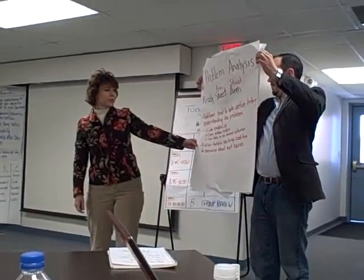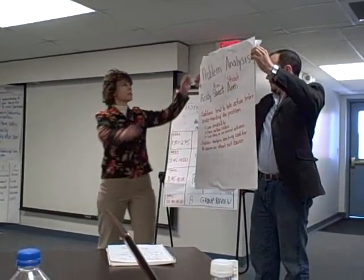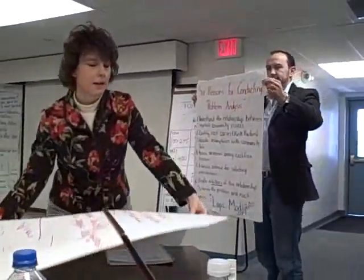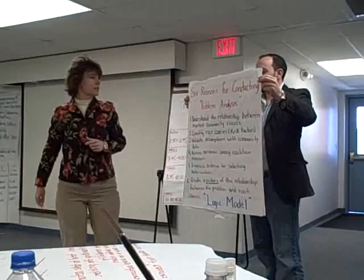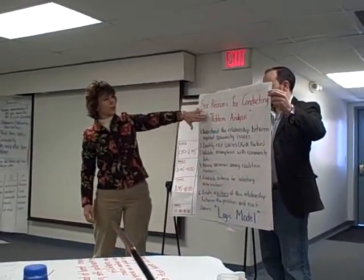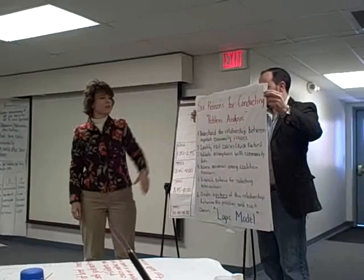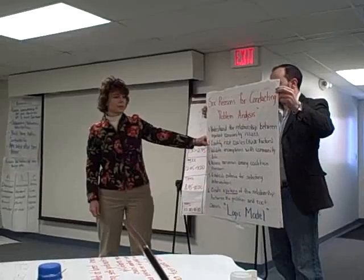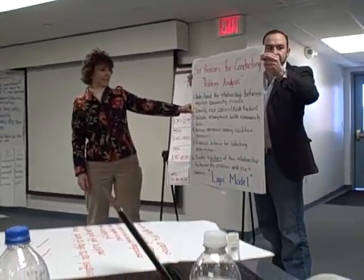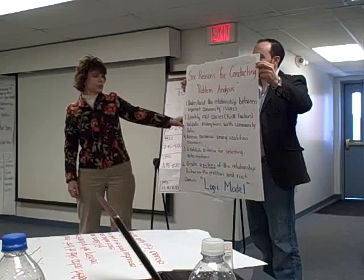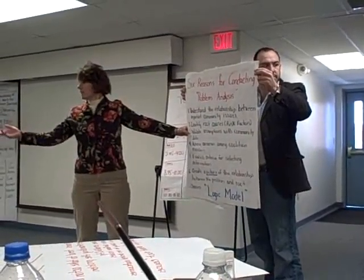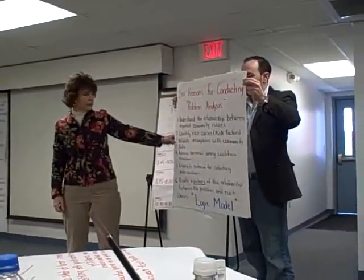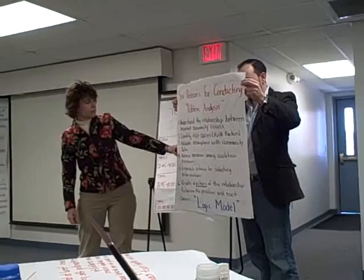They chase surface issues and are less likely to see desired outcomes. Problem analysis can bring coalitions to consensus about root causes and risk factors. We're going to talk to you this morning about six reasons for conducting a problem analysis. First: understand the relationship between important community issues. Identify the root causes — but why — in our community. Validate assumptions with community data; that's a part of doing your needs assessment.